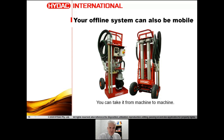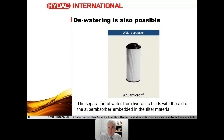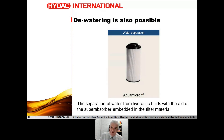Another advantage of offline filtration is you can do water removal as well, by use of filter elements. Acromicron elements from HIDAC provide separation of water from hydraulic fluids with the aid of a super absorber embedded in the filter material. However, you can't just swap these into a dynamic pulsing system — they need a low flow rate. Offline filtration is a really nice place to put them, but you can't use these elements in a standard pressure line or return line of a dynamic system. If you have water problems, you can have permanent water removal in an offline system.